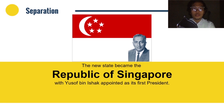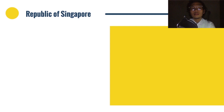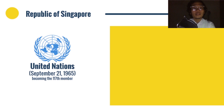Singapore immediately sought international recognition of its sovereignty. The new state joined the United Nations on September 21, 1965, becoming the 117th member. It also joined the Commonwealth in October that year, and later co-founded the Association of Southeast Asian Nations (ASEAN) on August 8, 1967.